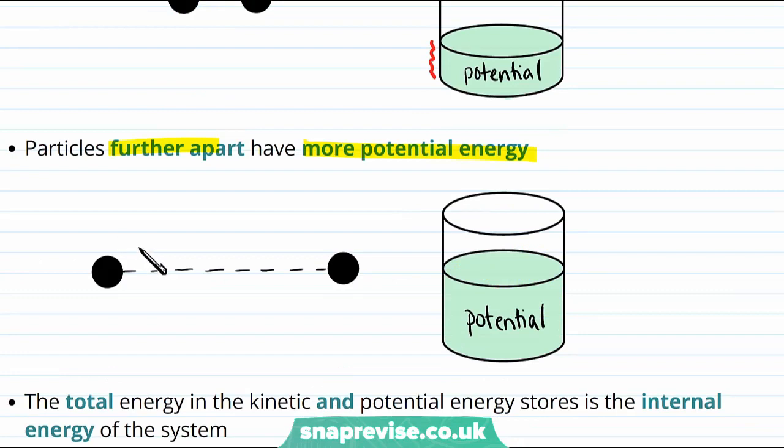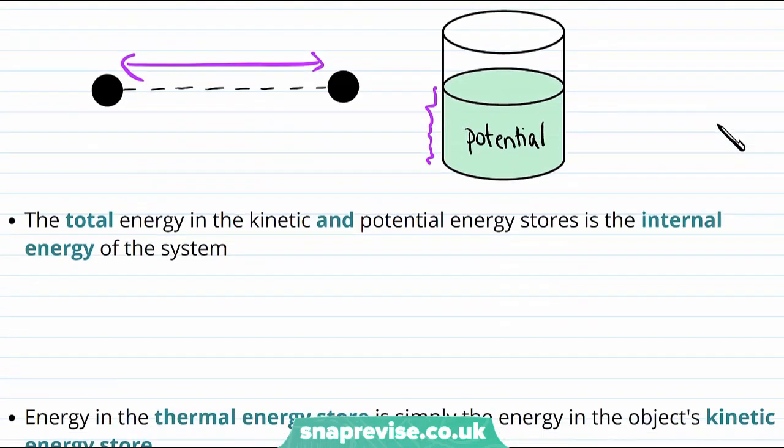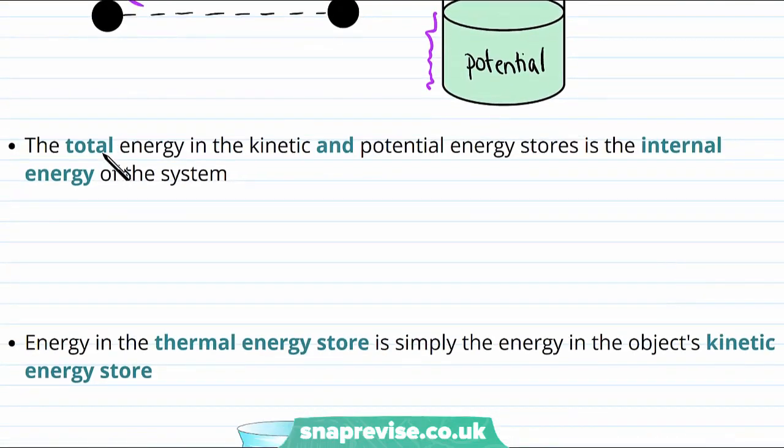So let's imagine we have two particles which are interacting, but are further apart. Then we see there is more energy in their potential energy stores. So the constituent particles of the matter have kinetic and potential energies. And the total energy in the kinetic and potential energy stores is what we would call the internal energy of the whole system.